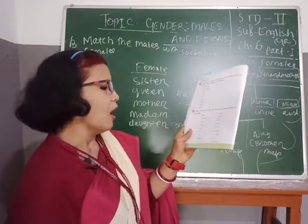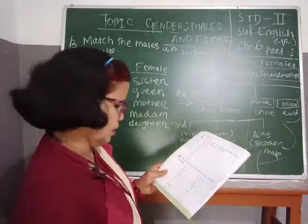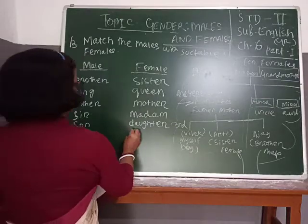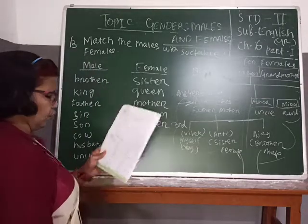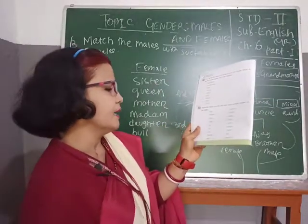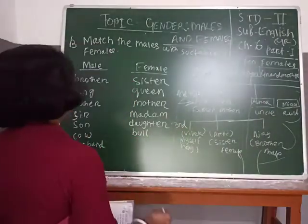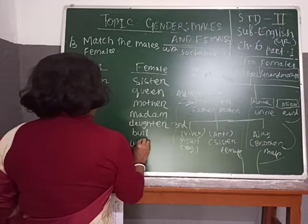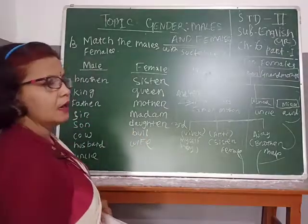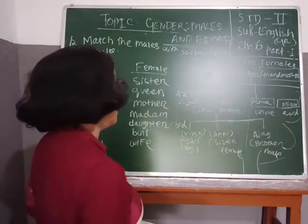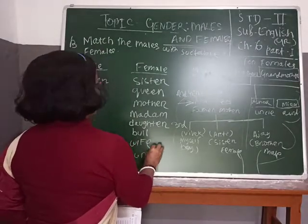Cow — cow's male is bull. B-U-L-L. Husband — husband's female is wife. W-I-F-E. Uncle — uncle's female is aunt. A-U-N-T.